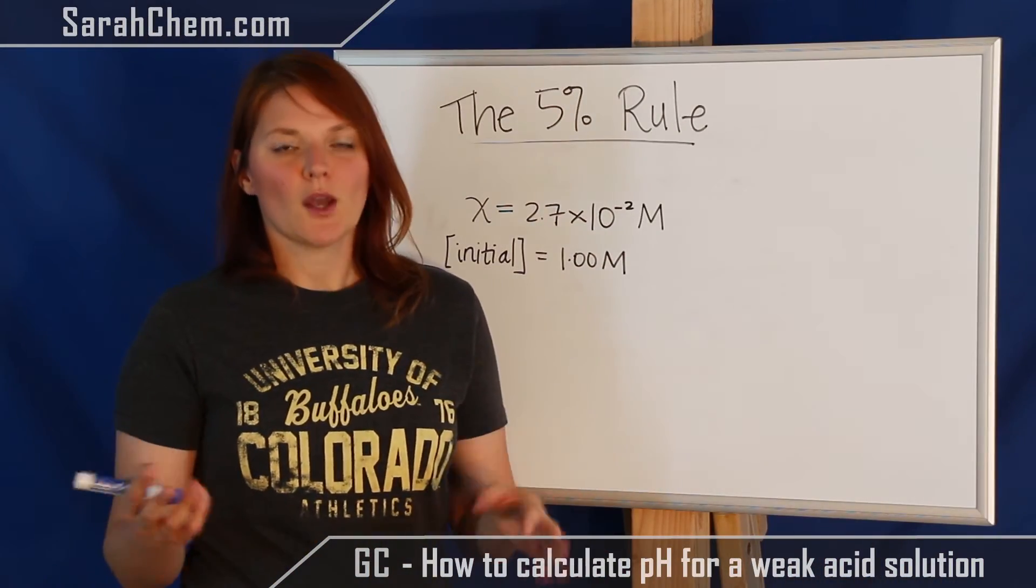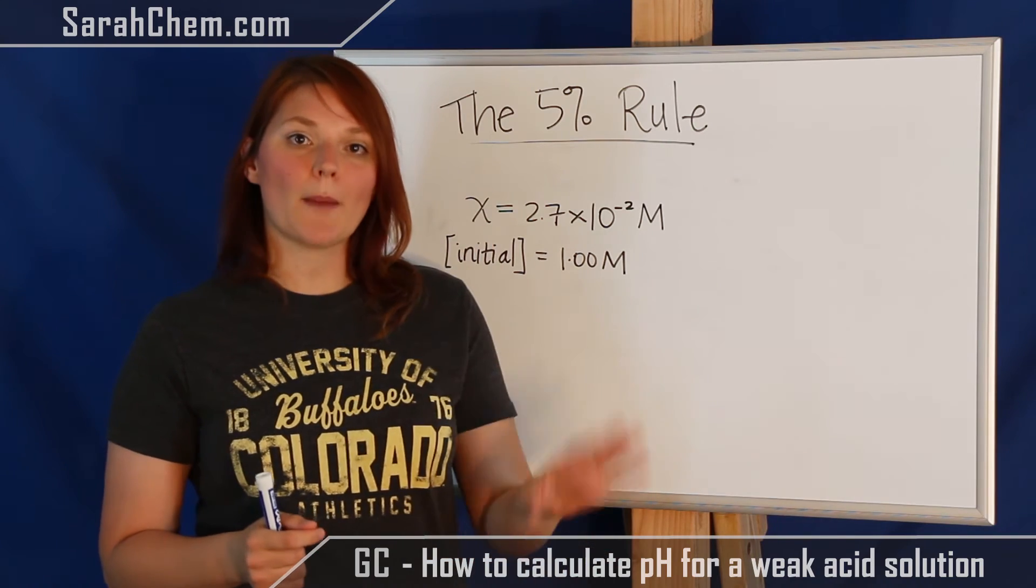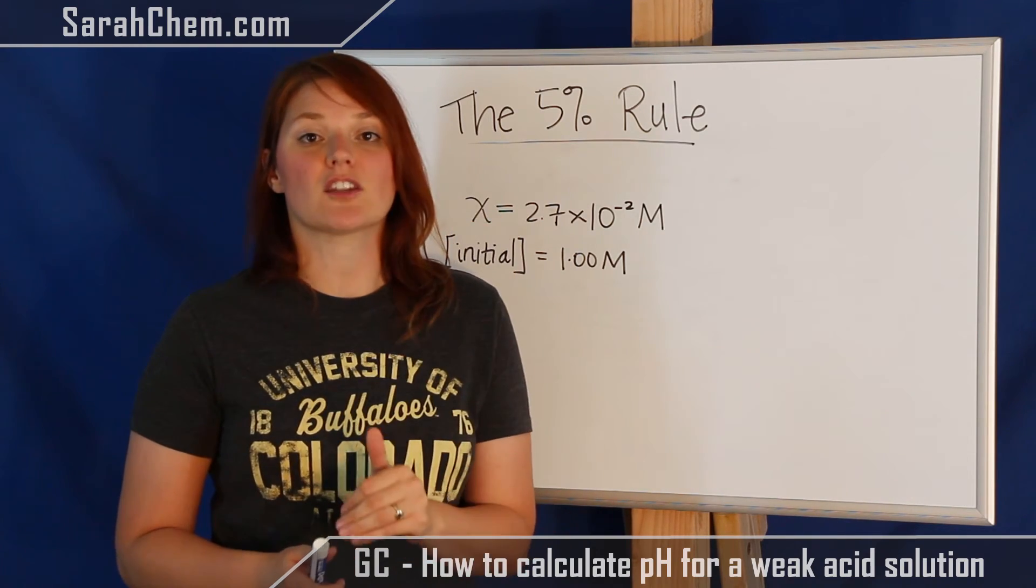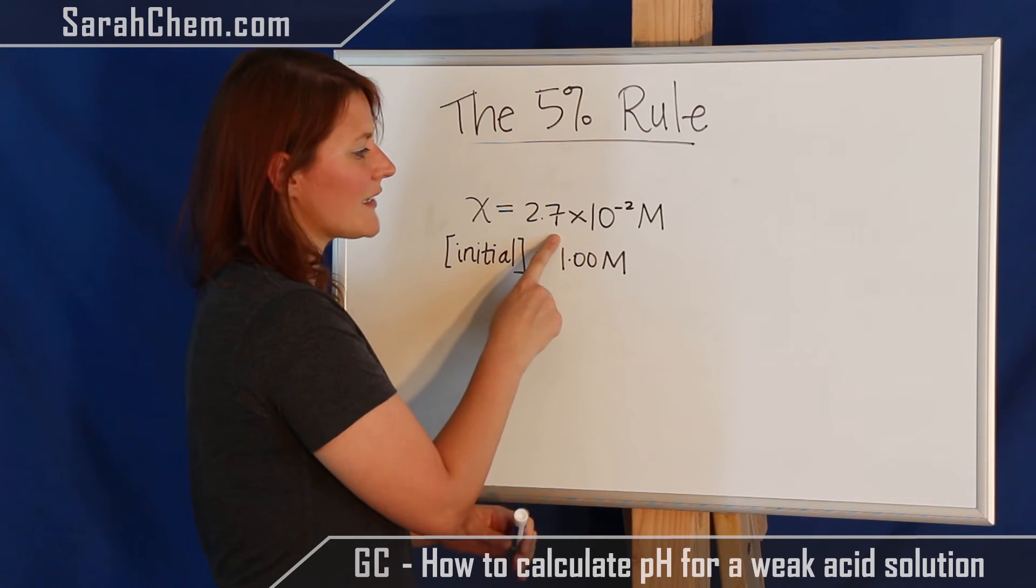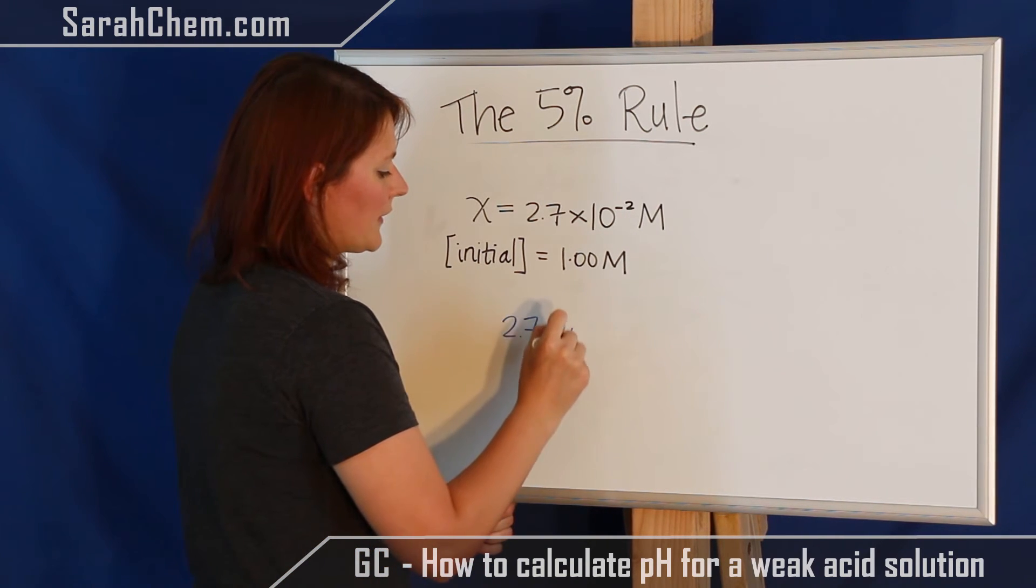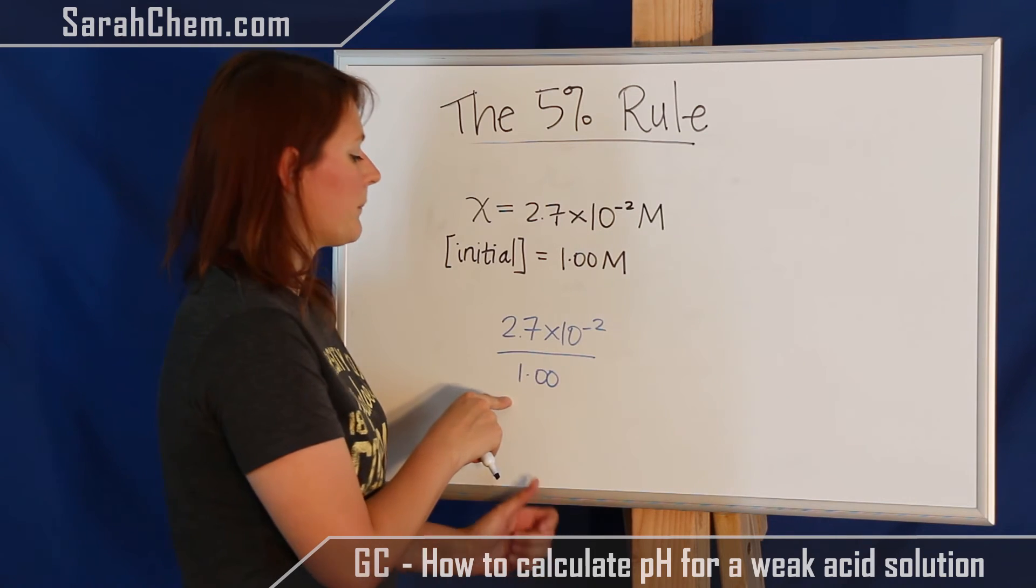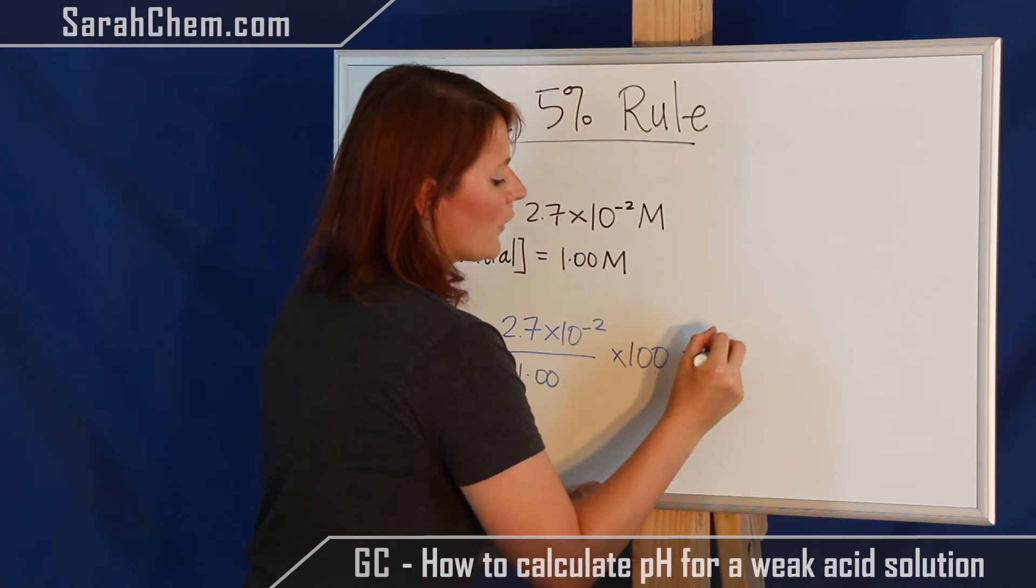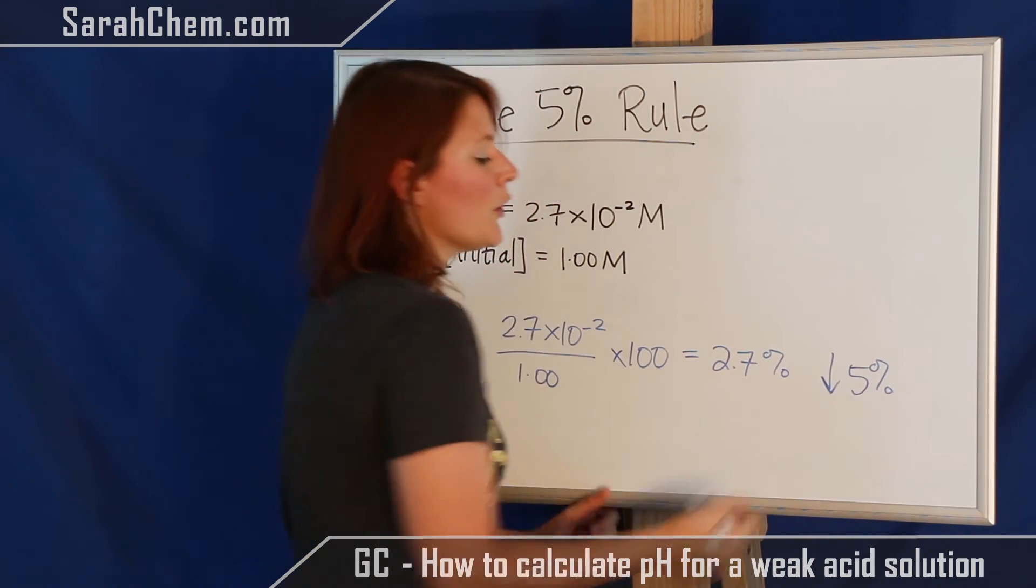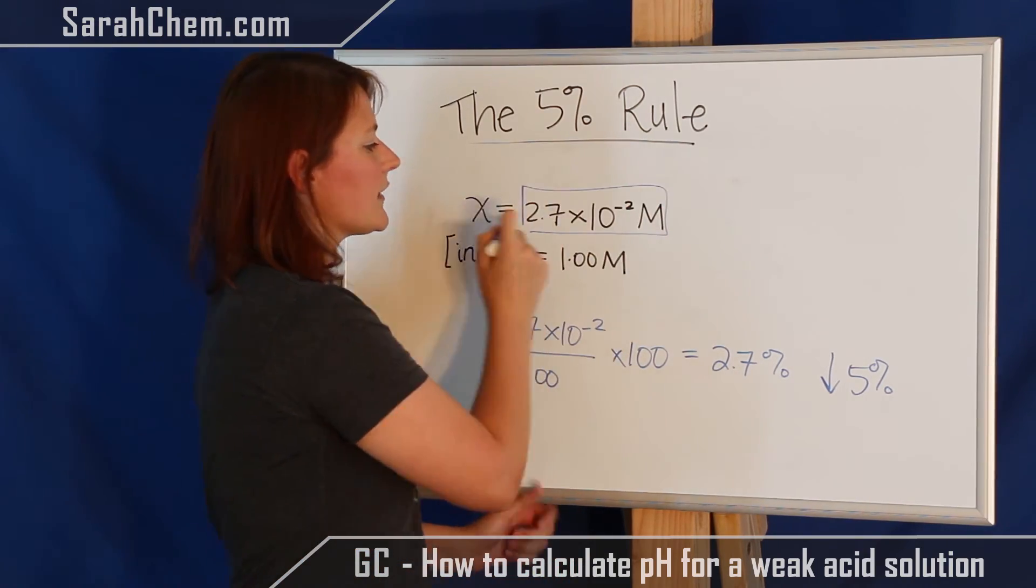Okay, so the 5% rule. What the 5% rule does is it gives us some kind of verification or validation that it was okay that we made the assumption that we could drop x in our calculation. So what we're looking for is that the x value is less than 5% of the initial value. So if we take a look at our x, it was 2.7 times 10 to the minus 2 M, and the initial concentration is 1.00 M. So what I'm going to do is take that x value, 2.7 times 10 to the minus 2, and I'm going to divide it by the 1.00 M. So I can figure out what fraction this is of the whole piece. I'm going to multiply it by 100 so that I can get a percent out, and when I do that I get 2.7%. So this here is less than 5%, which means it's okay for me to have made the assumption in my calculation from the ICE chart, and that I can go ahead and use this number for my next calculation.